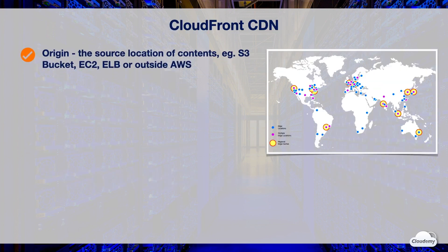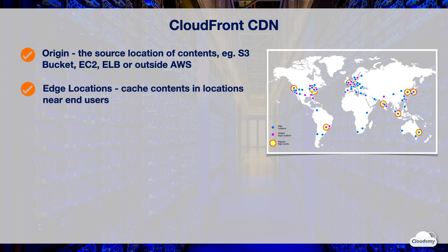Origin is the source location where contents are located. It can be an S3 bucket, EC2, Elastic Load Balancer, or even a web server outside AWS. Edge locations are locations where local caches of contents are stored — they are close to your end users. Between origins and edge locations is the Amazon ultra-fast global network backbone, which CloudFront leverages to deliver data and cache them in the edge location close to end users.